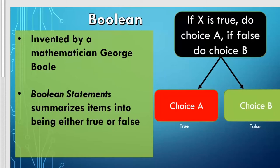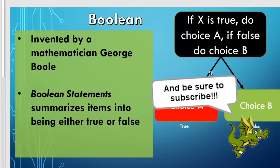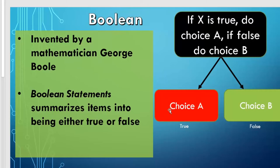The example I put over here is: if X is true, do choice A; if false, then do choice B. In some cases, choice B may be nothing—just a default where you don't do anything afterwards. Boolean statements are what we put inside Java and summarizes items into being either true or false when you're putting it inside your code and spelling it out.